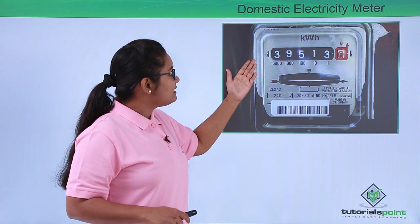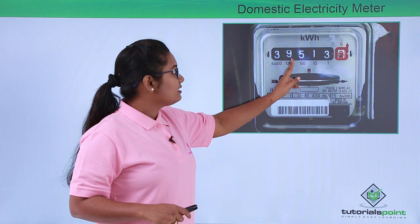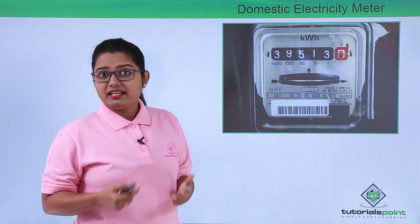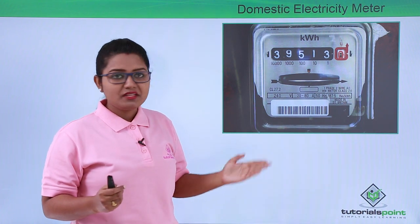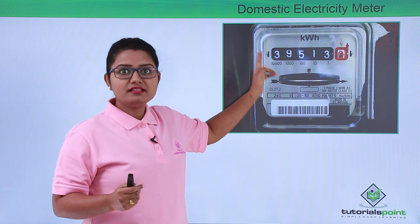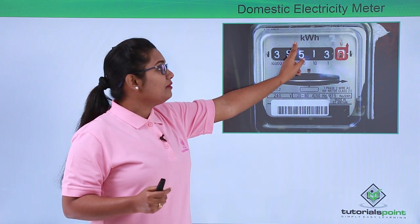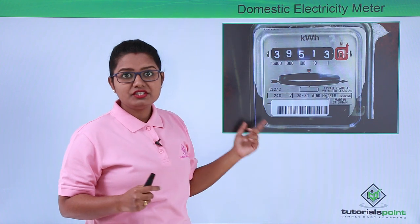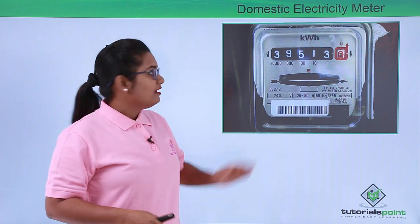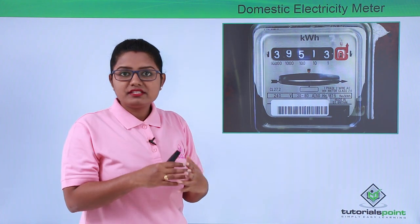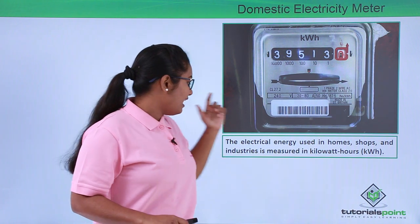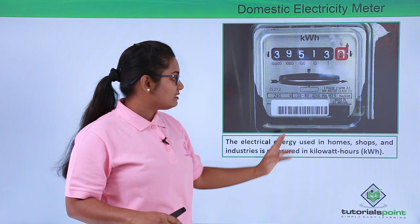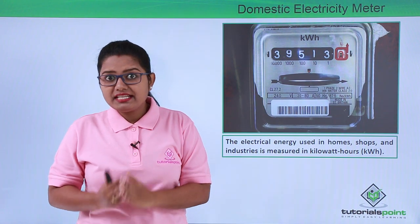You can clearly see that the unit by which this number is represented is not the SI unit of energy, which is joules. Instead, the electrical energy consumed in a household is written in another unit — KWH. This is the unit used commercially in homes, shops, and industries to measure electrical energy consumption, and it is called kilowatt hour. So the commercial unit of energy is KWH.